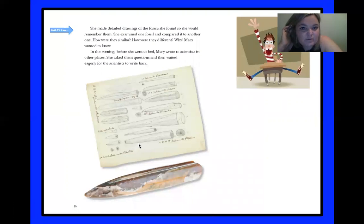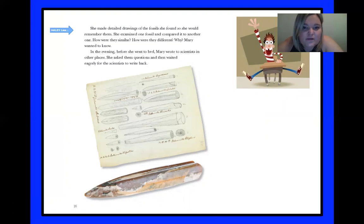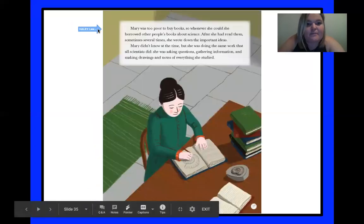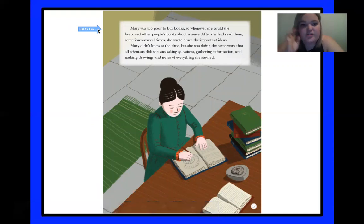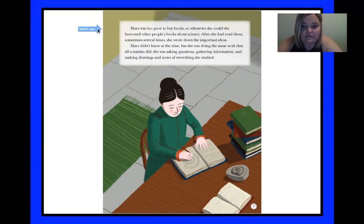She examined one fossil and compared it to another. How were they similar? How were they different? Why? Mary wanted to know. In the evening, before she went to bed, Mary wrote to scientists in other places. She asked them questions and then waited eagerly for the scientists to write back. Mary was too poor to buy books, so whenever she could, she borrowed other people's books about science. After she had read them — sometimes several times — she wrote down the important ideas. Mary was doing the same work that all scientists did: asking questions, gathering information, and making drawings and notes of everything she studied.